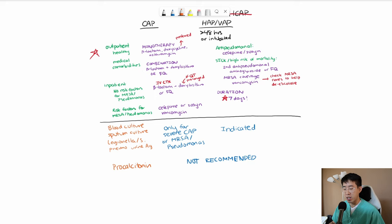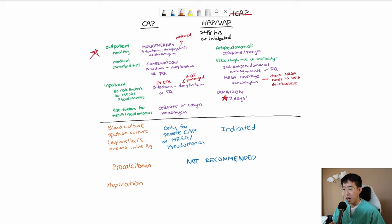An older mistake that I'm not really seeing that much of anymore is adding anaerobic coverage for aspiration pneumonia. Now, the previous thought was that a lot of the microorganisms that live in your oral flora tend to be anaerobic organisms. And so if somebody's mechanism of pneumonia was that they aspirated, then they should be treated with an anaerobic coverage antibiotic. Now, that's not really shown to improve any outcomes. And so anaerobic coverage is not recommended for aspiration pneumonia.